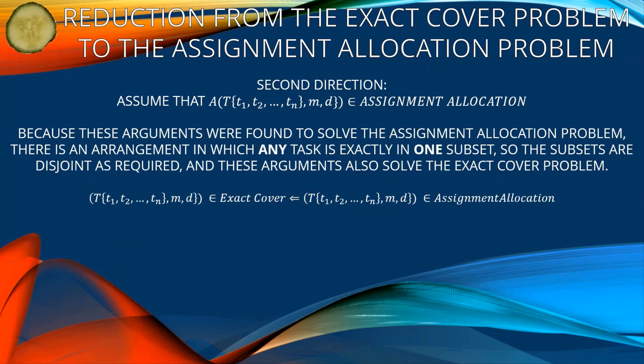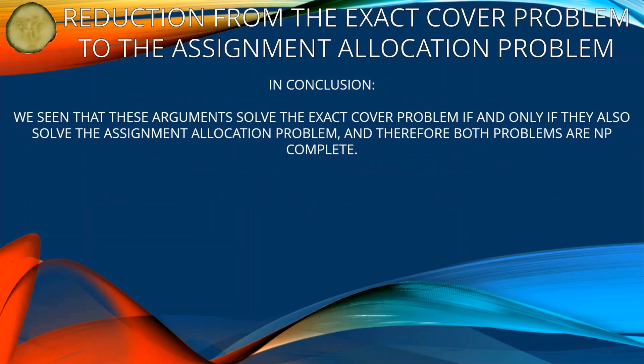Second direction: assume that a, t = {t1, t2, ..., tn}, m, and d are in assignment allocation. Because these arguments were found to solve the assignment allocation problem, there is an arrangement in which any task is exactly in one subset. So these subsets are disjoint, as required, and these arguments also solve the exact cover problem.